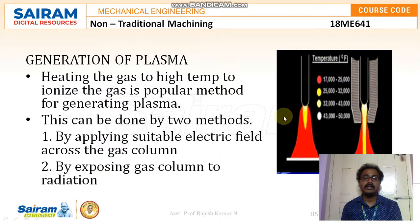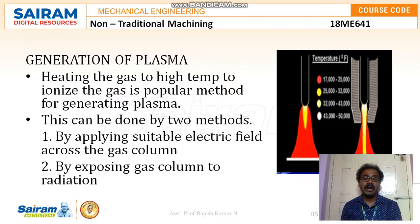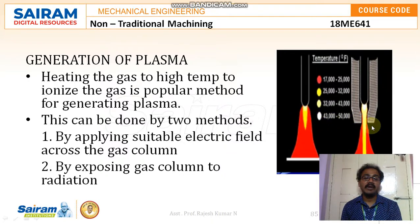You can see the temperature in the two different cases. The red color indicates a temperature of 17,000 to 25,000 degree Fahrenheit, yellow indicates 25,000 to 32,000 degree Fahrenheit, pale white indicates 32,000 to 43,000 degree Fahrenheit, and pure white indicates 43,000 to 50,000 degree Fahrenheit. Both methods can achieve these temperature ranges.